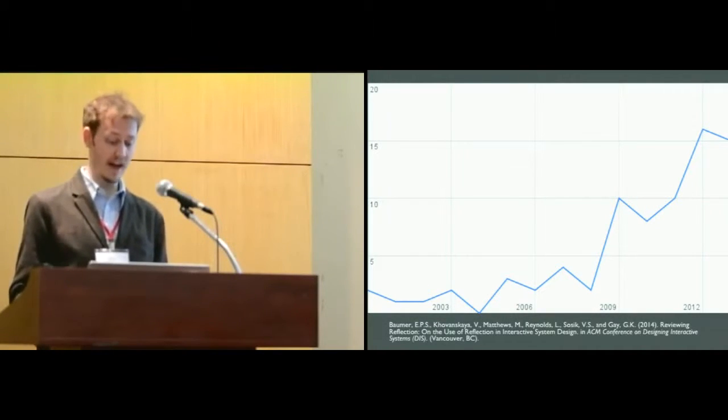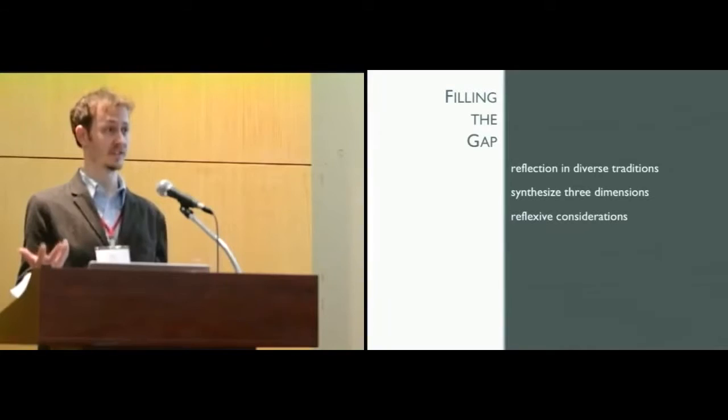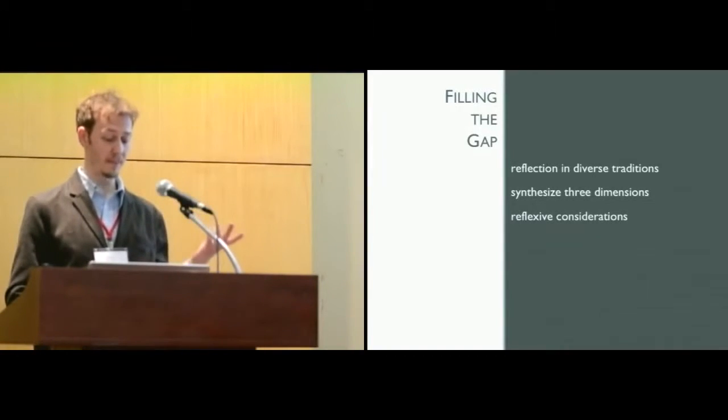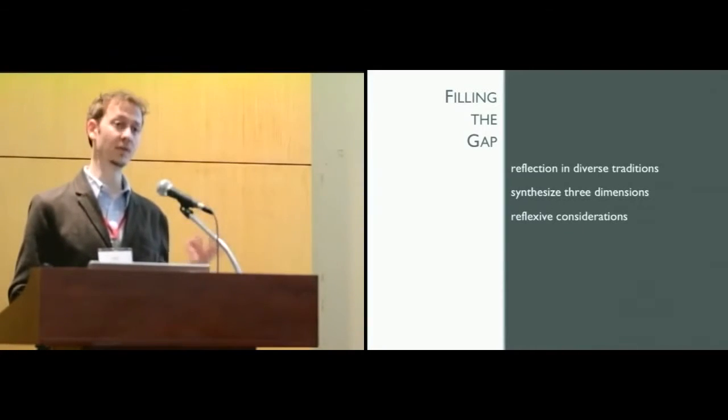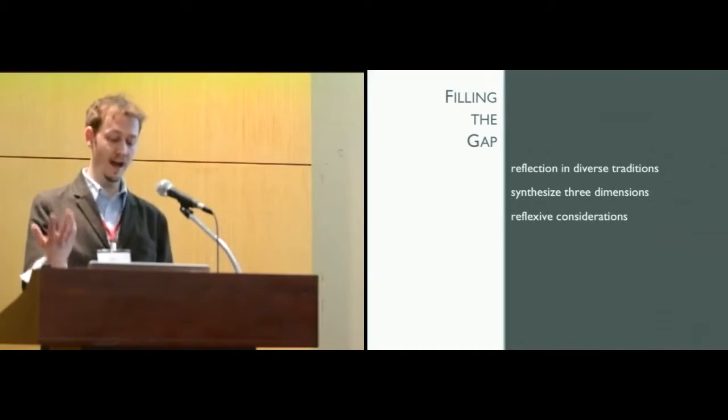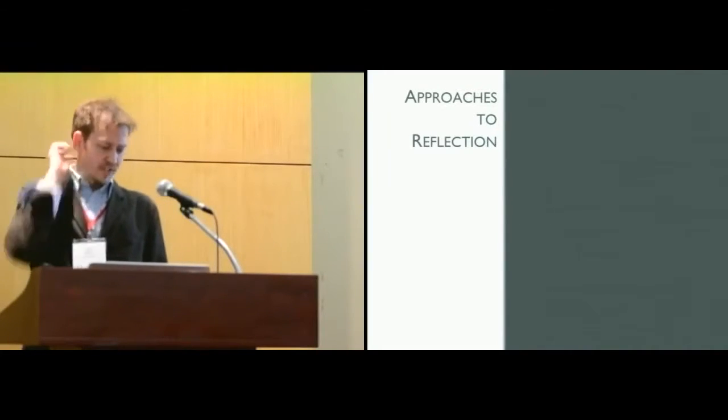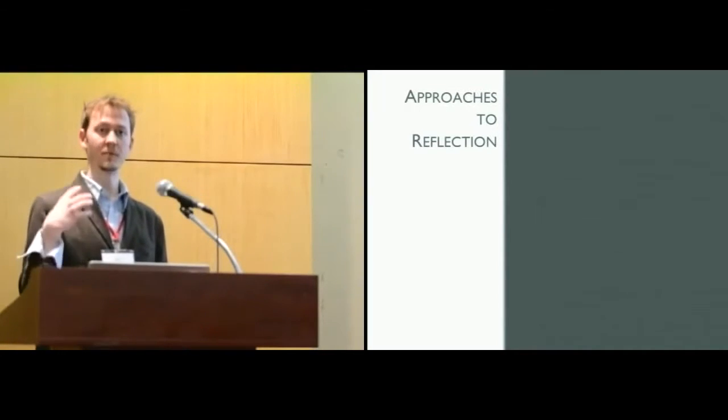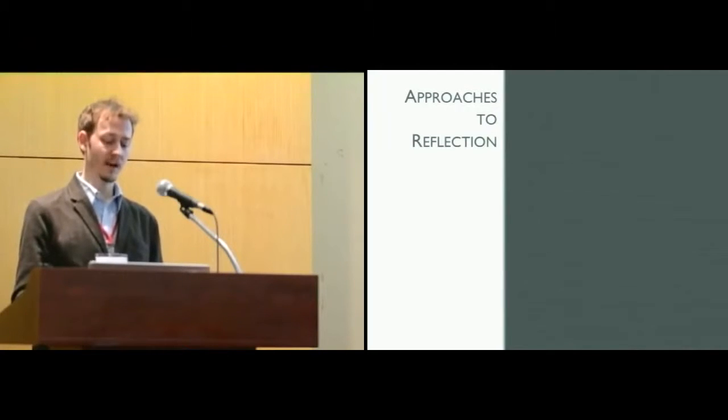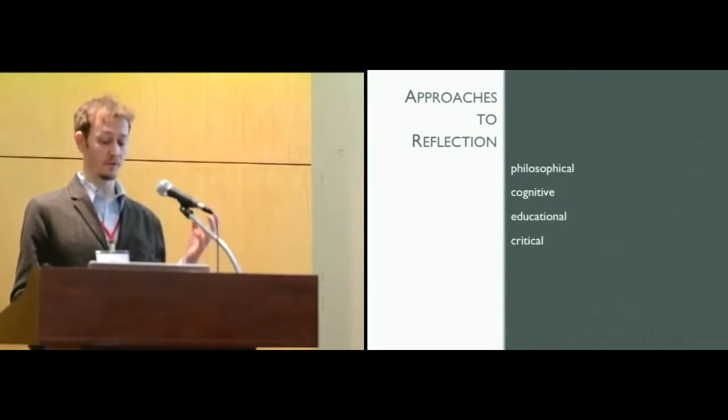This paper addresses that gap. To do so, it reviews conceptual and theoretical literature on reflection from a range of disciplines and traditions. I'll then describe how the paper synthesizes across these bodies of literature to draw out three conceptual dimensions of reflection that could be useful to inform design. And finally, in the spirit of reflection, I'll conclude with some reflexive considerations about how we approach the phenomenon of reflection in interaction design. So there's conceptual and theoretical frameworks for reflection that can be found in a variety of areas. This paper organizes that work not just in terms of the different disciplines from which it comes, but moreover in terms of the epistemological traditions that they represent. Specifically, it considers work from four different approaches.